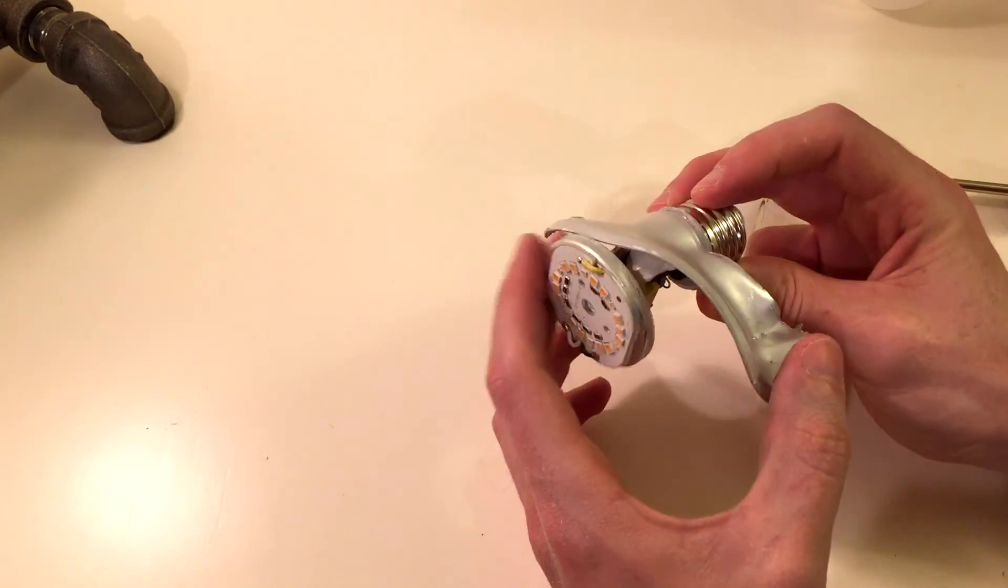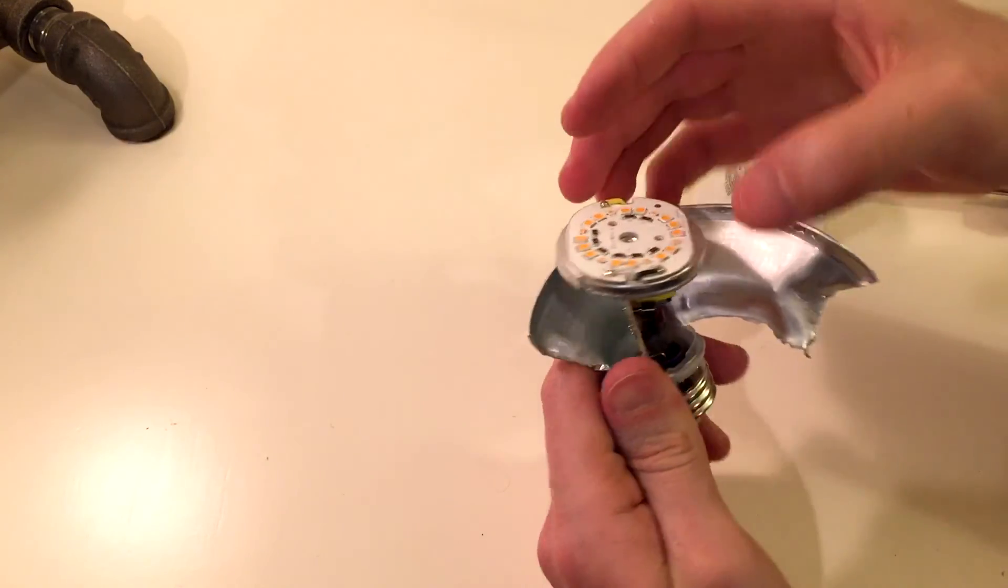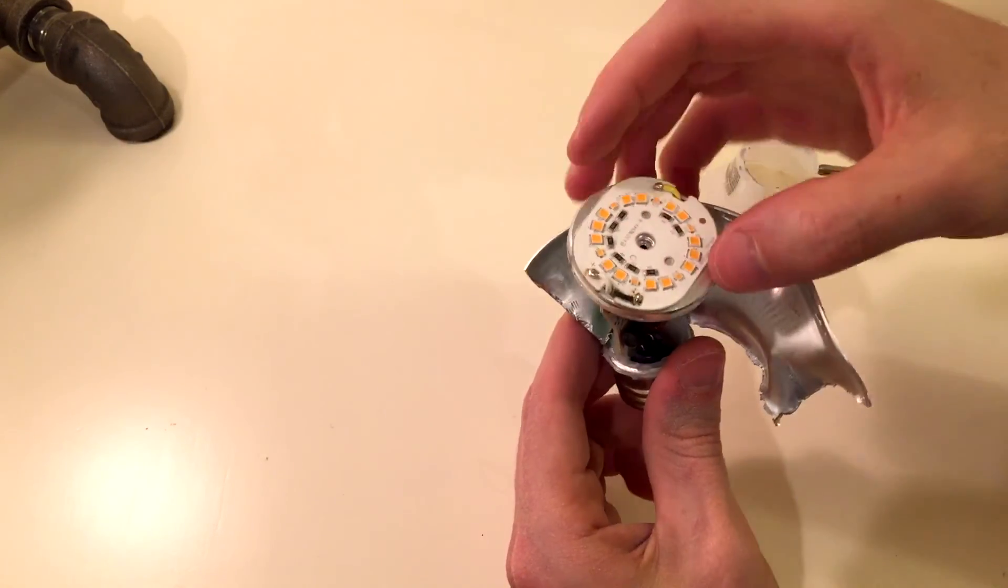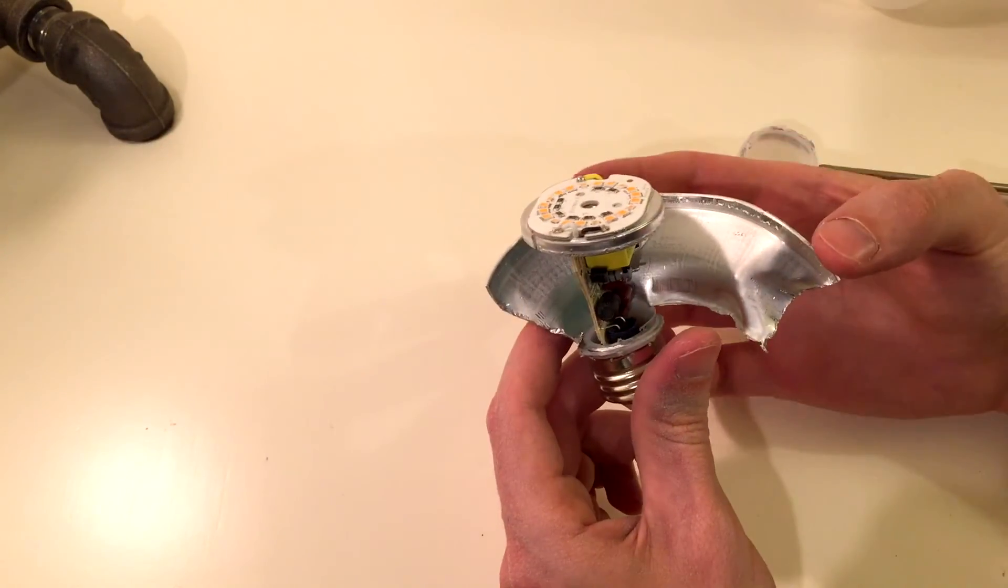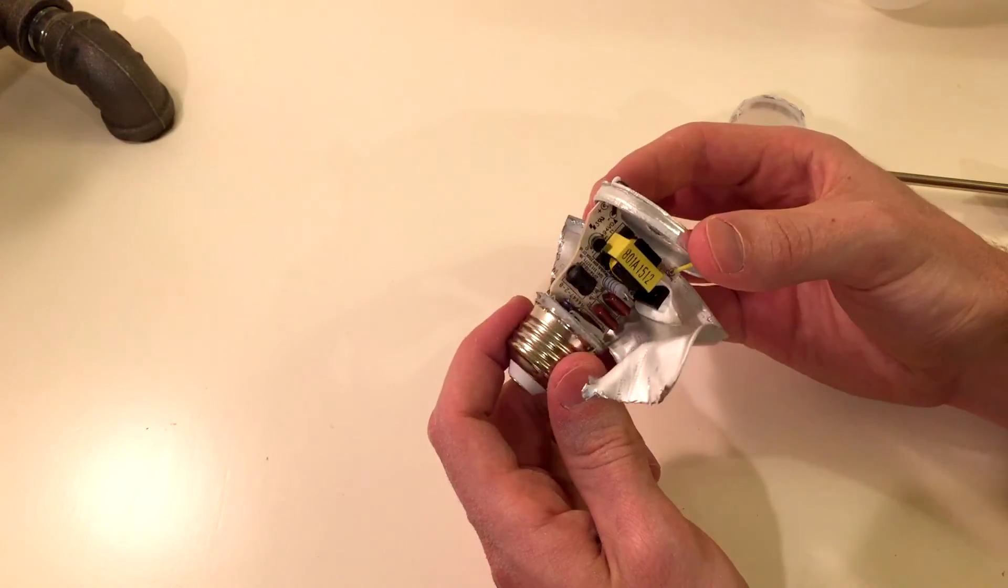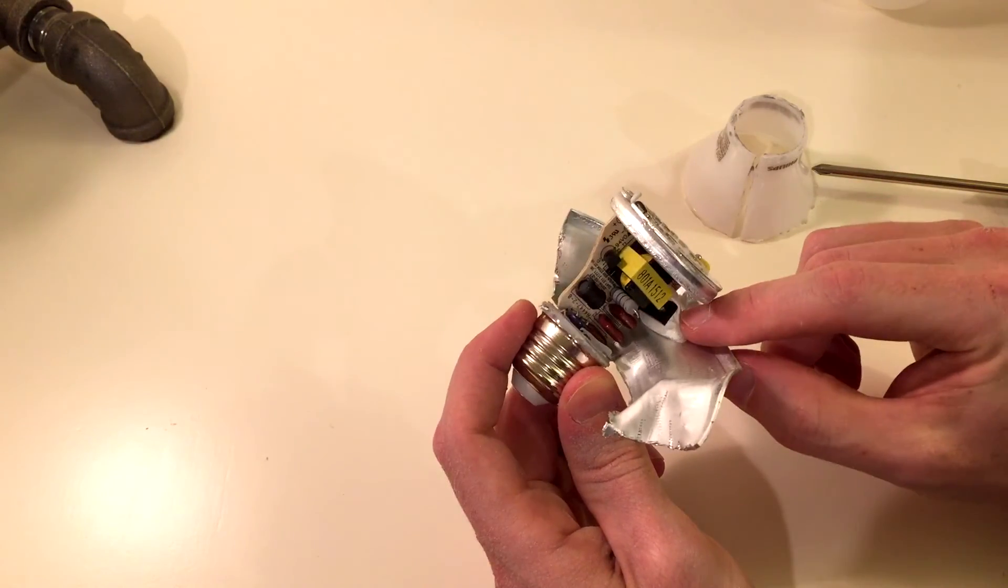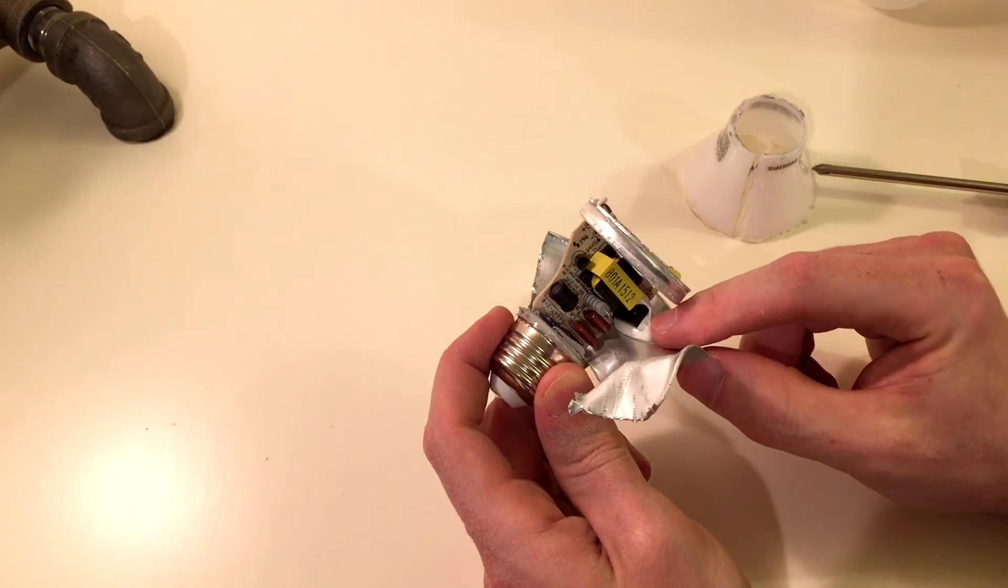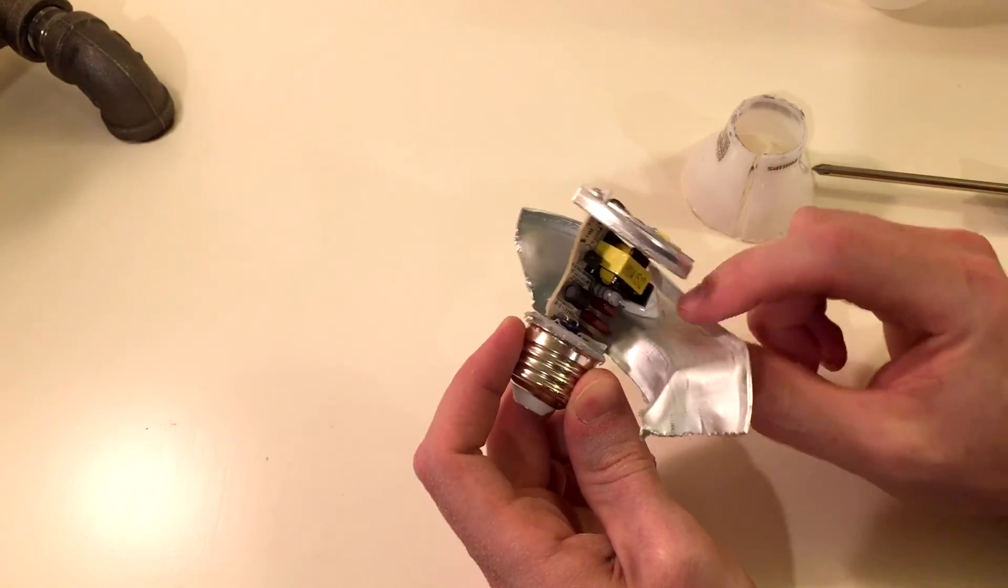So, this can acts as the heat sink and this PCB with LEDs on it kind of sits into this groove of this can here. And then the power supply is in here. And it looks like they have a FET or something that maybe does the pulse width modulation of the LEDs. And that's thermally bonded to this can too.